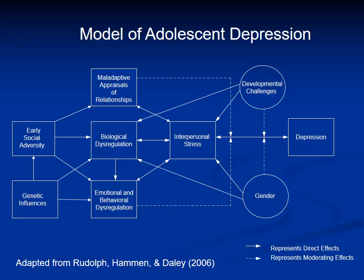The model highlights how genetic factors and early social adversity undermine the development of biological, psychological, and social competencies, which then puts youth at risk both for generating more stress in their relationships and for showing maladaptive responses to interpersonal stress when it does occur, which then results in depression.